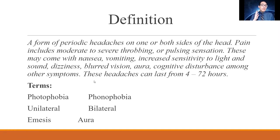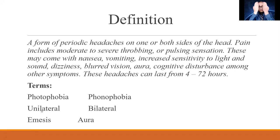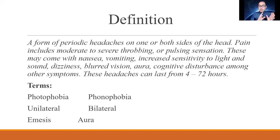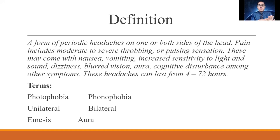Some key terms: photophobia means inability to tolerate light; phonophobia means inability to tolerate loud sounds; unilateral means one-sided; bilateral means two-sided; emesis means vomiting. An aura refers to those flashes of lights — like what Scarlet experienced — that warn a migraine is coming. Note that this is the medical usage of aura, not the new age concept of a person's energy field color. In migraine medicine, aura simply means flashes of light in your vision that are not normal.